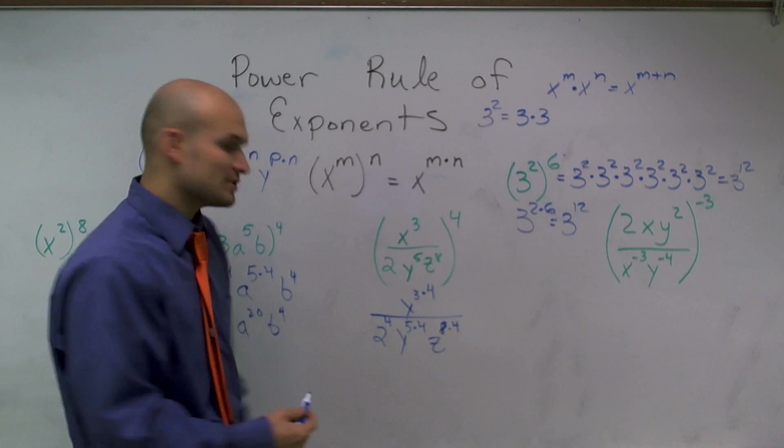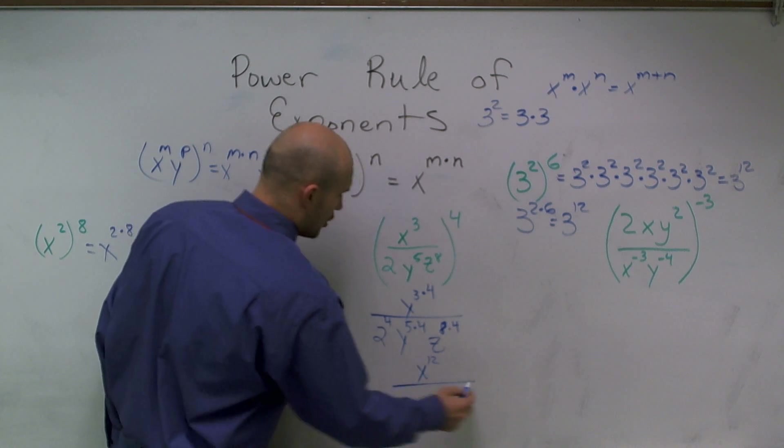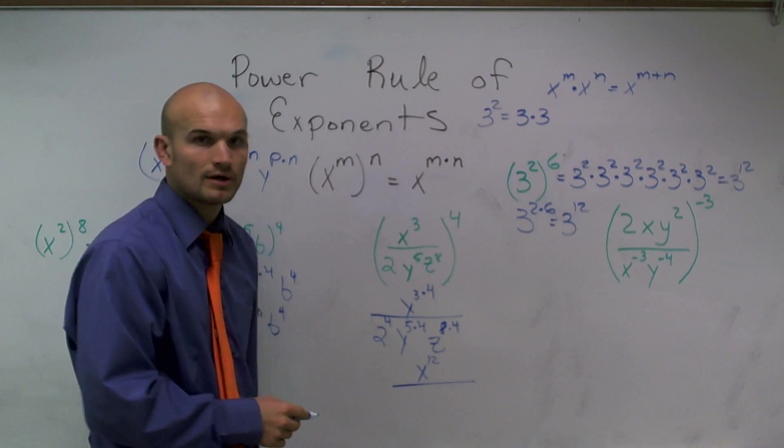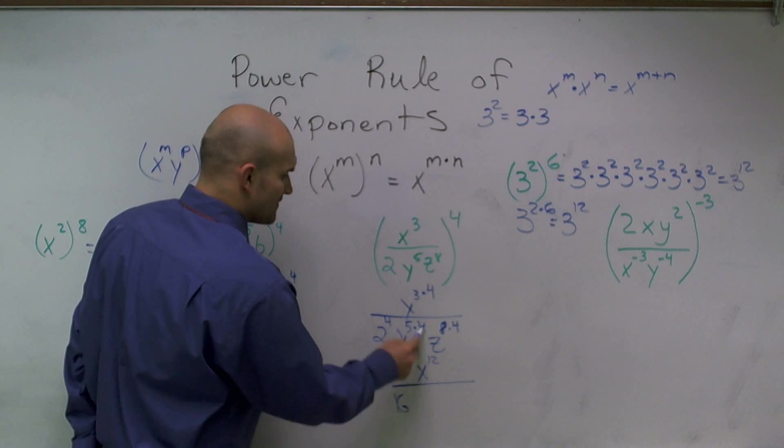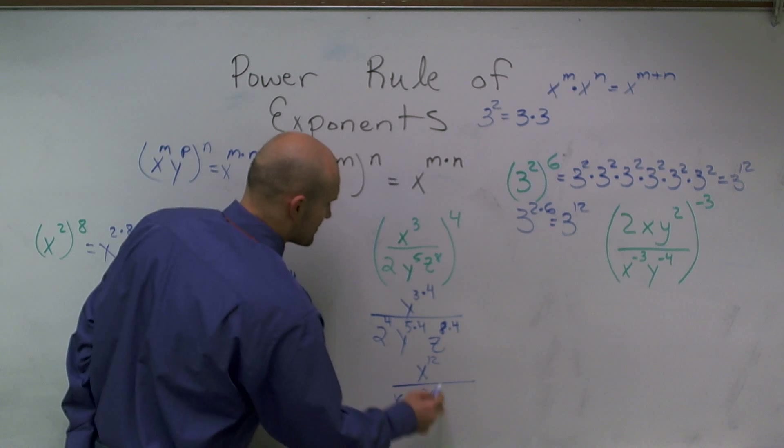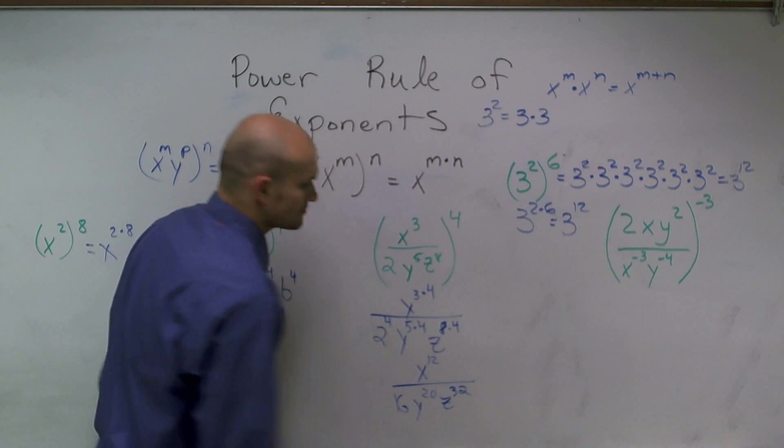So now, when I reduce this, I have x to the 3 times 4, which is x to the 12th, over 2 to the 4th power, which ends up being 16. y to the 5 times 4 is y to the 20th, and z to the 37th.